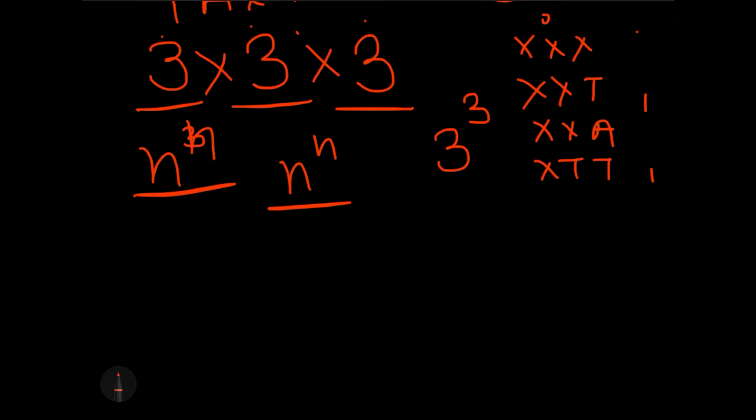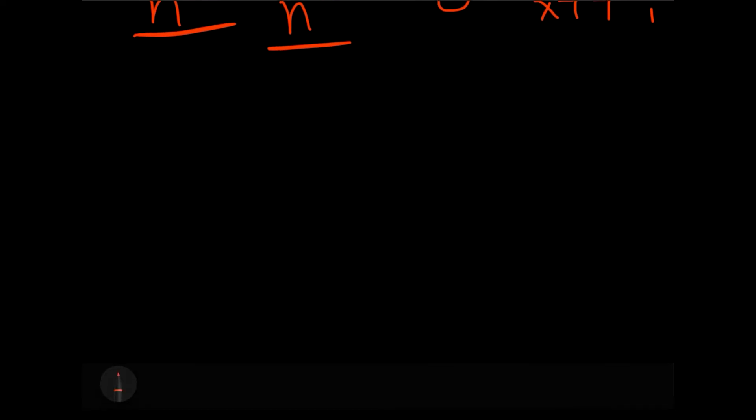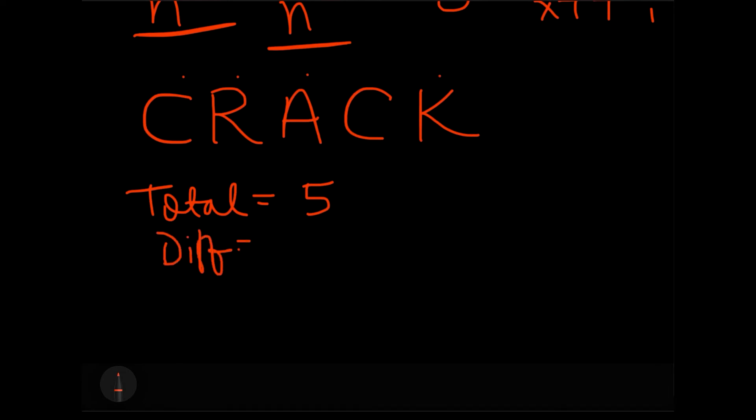Now the last question for the day. We can also take an example of a word which is having repeated words. Let's take CRACK. So if I take CRACK, I know that out of the total five letters, I have one, two, three, four different letters, and one letter which is repeating is C.